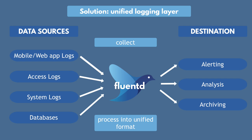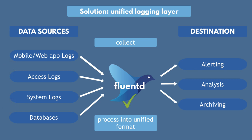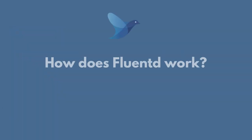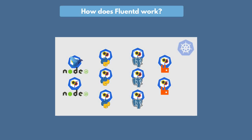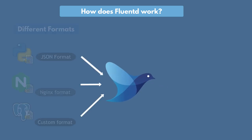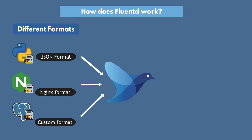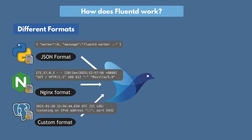Fluentd does that reliably — meaning if there is a network outage or data spikes, this shouldn't mess up data collection, and Fluentd handles such cases as well. Fluentd gets deployed into the cluster and starts collecting logs from all the applications — your own applications, third-party applications, all of it. These logs that Fluentd collected will be of different forms and formats, like JSON format, Nginx format, some custom format, and so on.